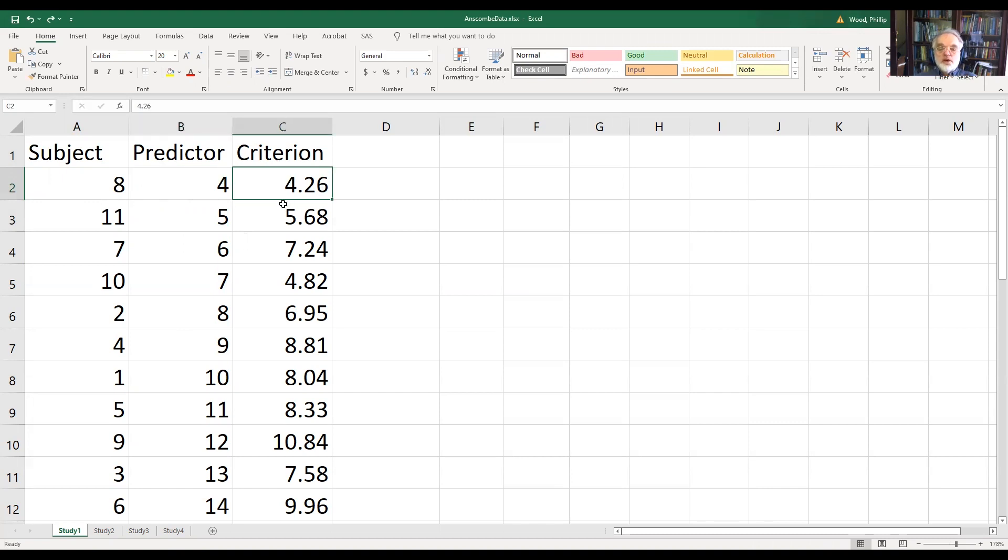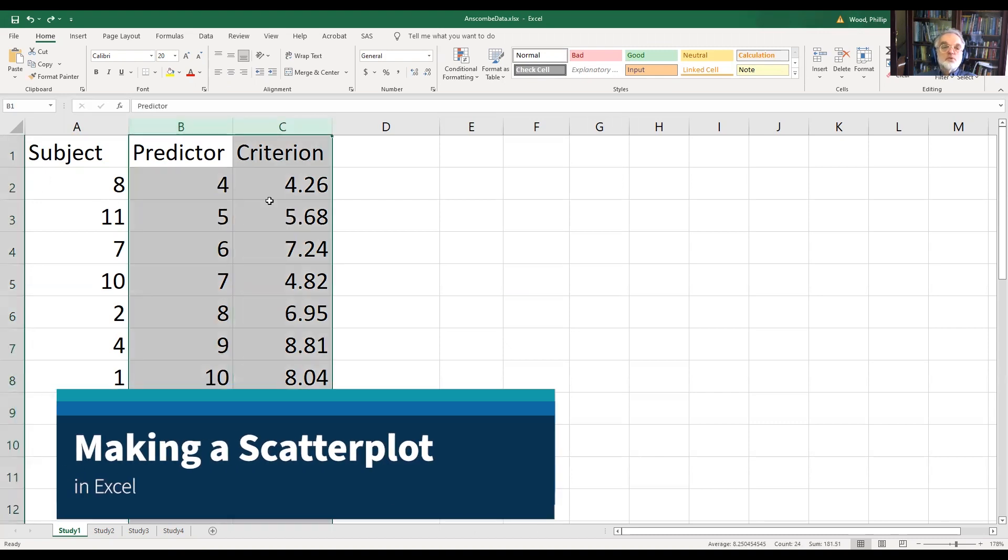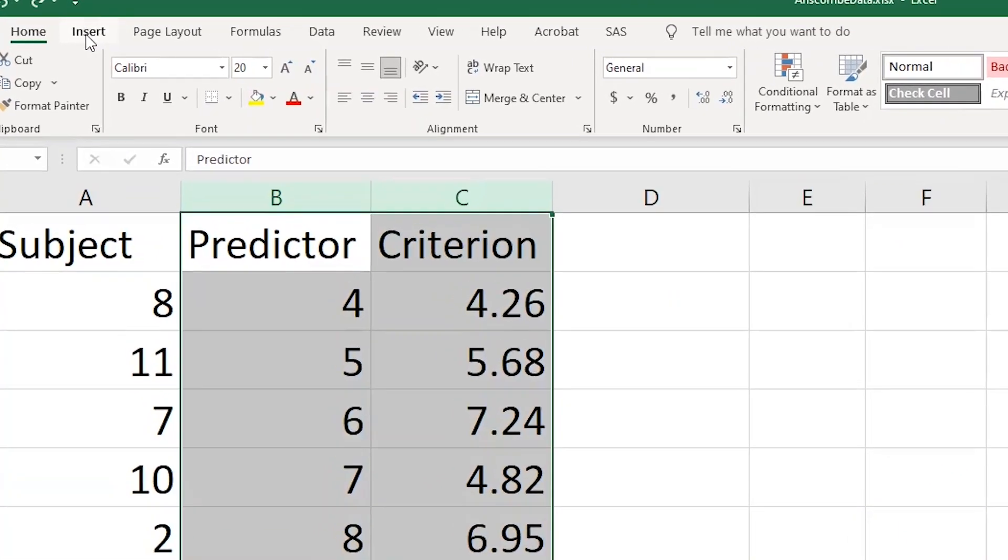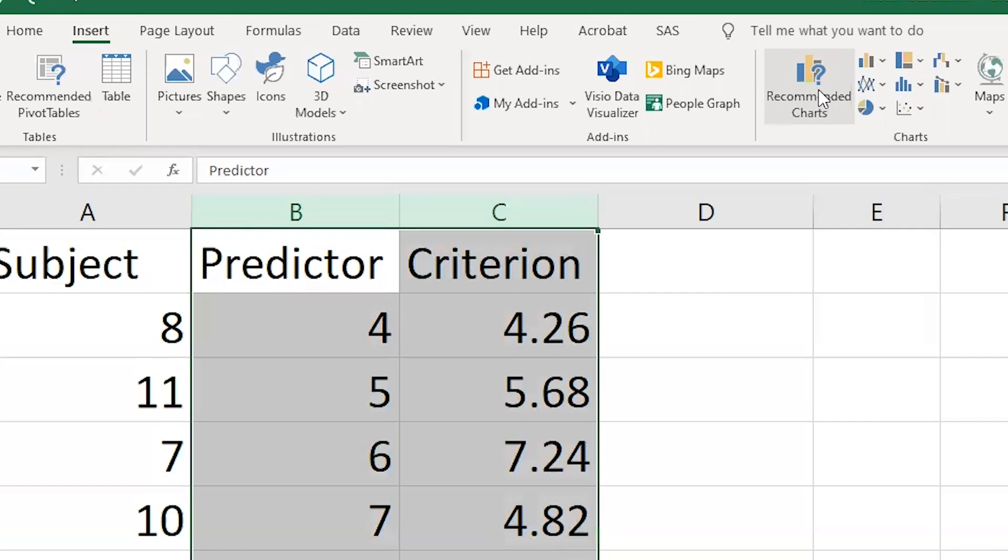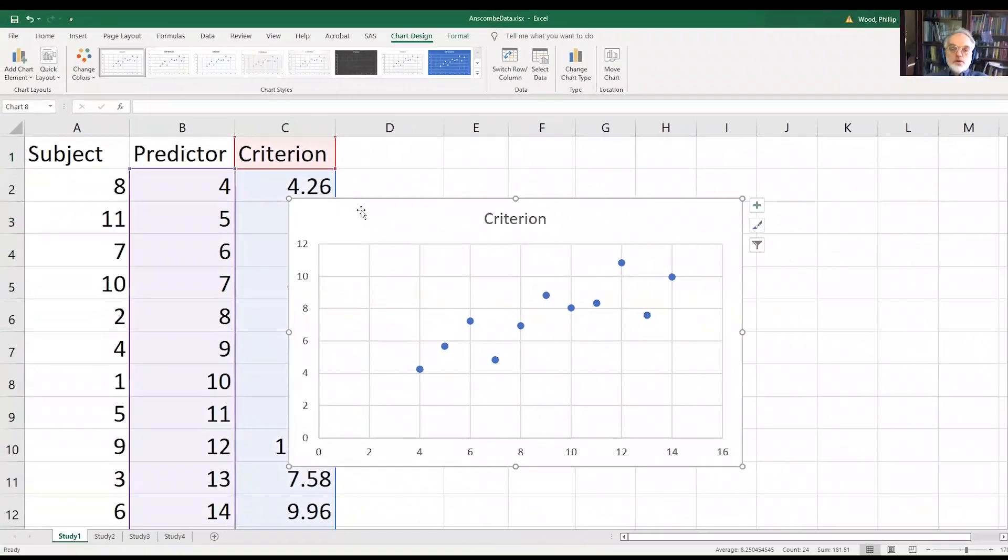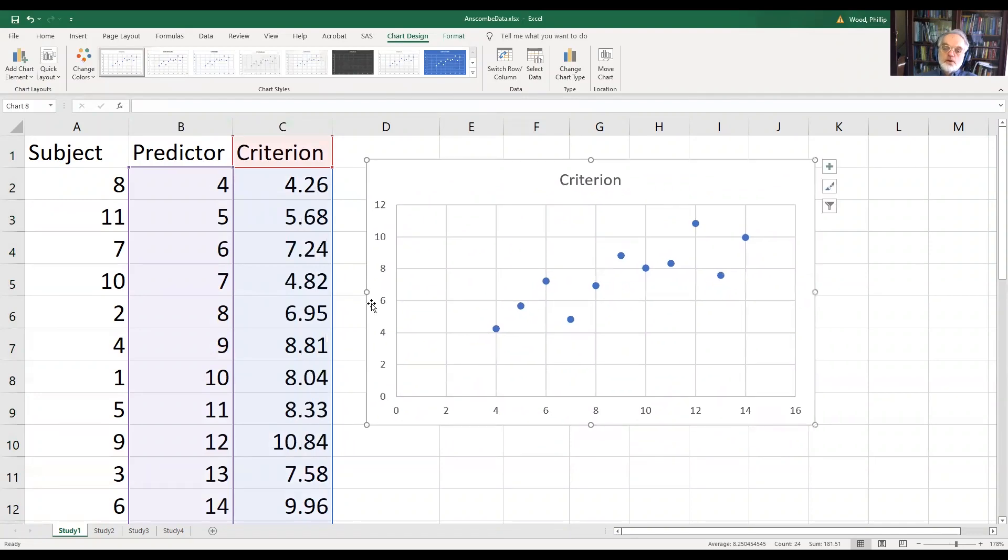Now, if you're interested in making a scatterplot, it's pretty straightforward. We select the two variables that we're interested in looking at, and then we come into the insert tab and say insert a scatterplot, and here we have our scatterplot.